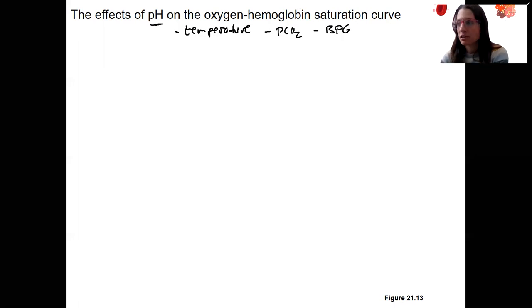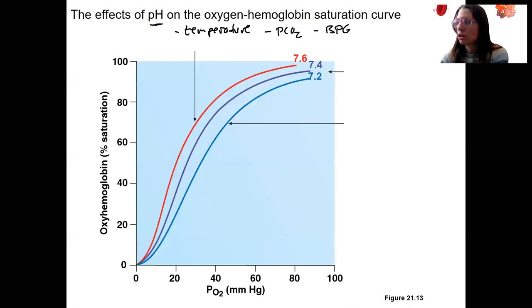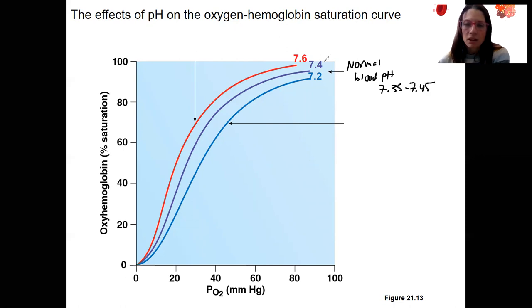So let's look at one of these. We're going to look at pH. So here is, what is this? What's normal? Well, I'll tell you, normal blood pH is between 7.35 and 7.45. So this is our normal. This is the hemoglobin, oxygen hemoglobin saturation curve in purple. That's kind of our normal that we drew in the previous slide.